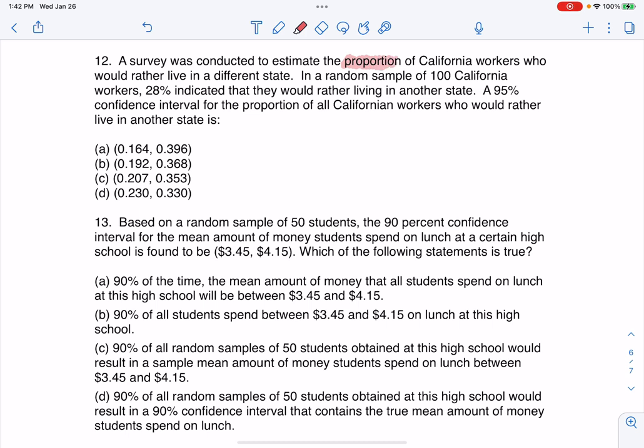That is usually a buzzword for me. In a random sample of 100 California workers, so I've got random sample, 28% indicate that they would rather live in another state. A 95% confidence interval for the proportion of all California workers who would rather live in another state is requested.